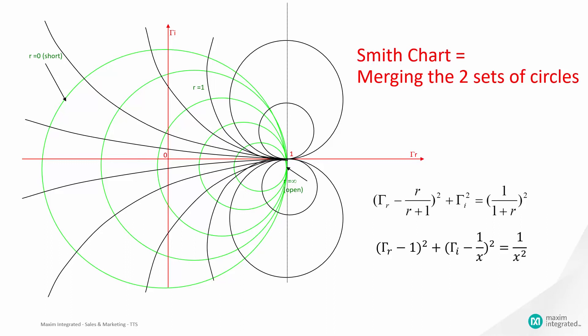The Smith chart can also be seen as a graphic converter between normalized load impedance and the reflection coefficient gamma. This allows you to immediately see which impedance Z will give reflection and vice versa. The Smith chart can help to tune impedance in order to minimize reflection.